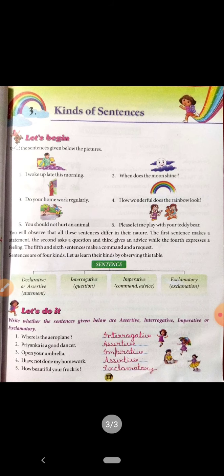Second: Priyanka is a good dancer. This is a statement. At the end there's also a full stop. So what type of sentence is this? Assertive. Next, third: Open your umbrella.